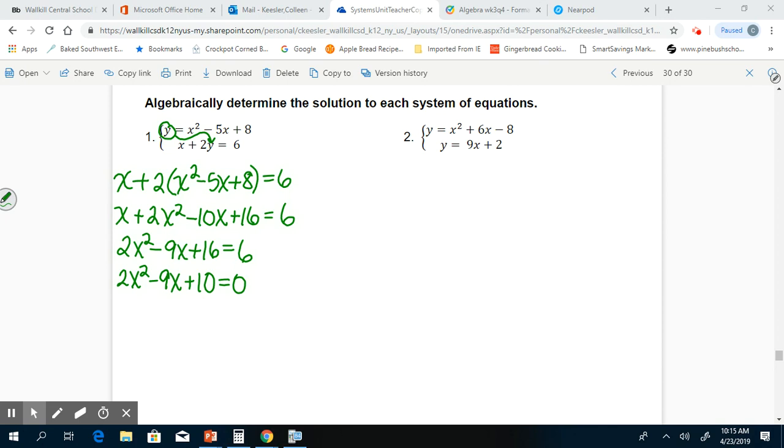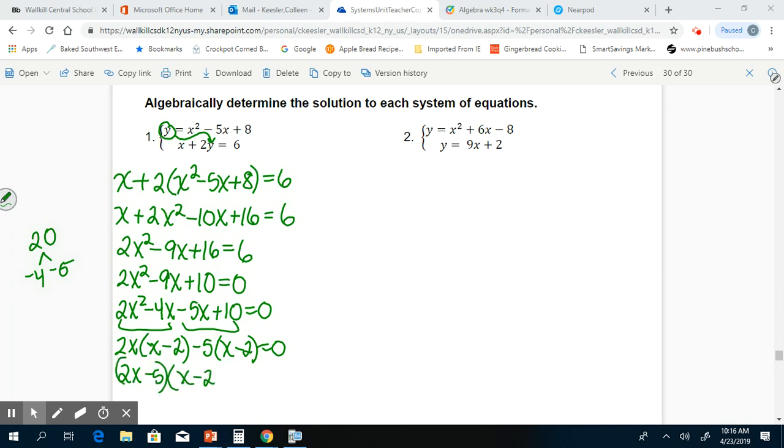I would always prefer to use the factoring method if possible. In this case, I can't factor anything out, so I'm going to jump right into doing my grouping. 2 times 10 is 20, and my factors of 20 that have a sum of negative 9 would be negative 4 and negative 5. So now I'm going to group: 2x squared minus 4x minus 5x plus 10 equals 0. 2x can be factored out of my first grouping, and I get x minus 2. Negative 5 can be factored out of my second, which gives me again x minus 2. So I have 2x minus 5 as one of my factors, and x minus 2 as my other factor.